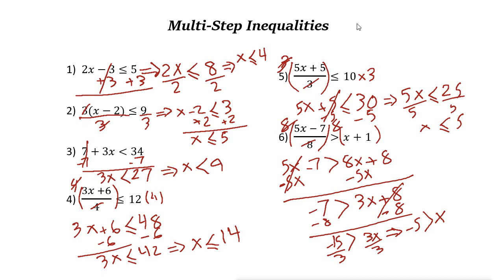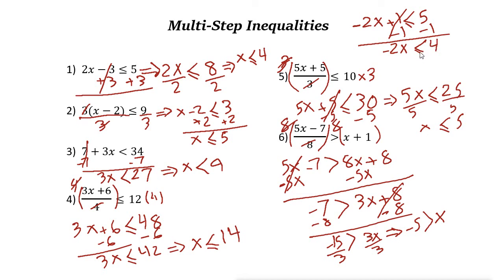One more important thing: take a look at this example. I have negative 2x plus 1 less than or equal to 5. First, subtract 1 from both sides — these cancel out — giving negative 2x less than or equal to 4. But now we need to divide both sides by negative 2. Whenever you divide or multiply by a negative number, you need to flip the direction of the inequality. So less than or equal to becomes greater than or equal to. Negative 2x divided by negative 2 is just x, but flip the inequality, so x greater than or equal to 4 divided by negative 2, which is negative 2.